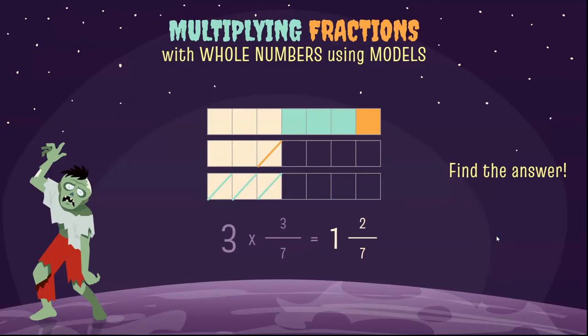We have one whole bar shaded. And we have two out of seven shaded in the middle bar. That's two sevenths. Of course, we always want to check to see if we can simplify.